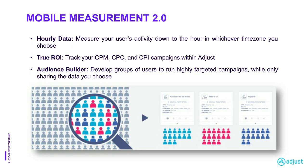Knowing these two major pain points for mobile marketers, Adjust began 2017 with Mobile Measurement 2.0. This included three big-ticket feature releases to start the year: hourly data, improved ROI, and the audience builder.